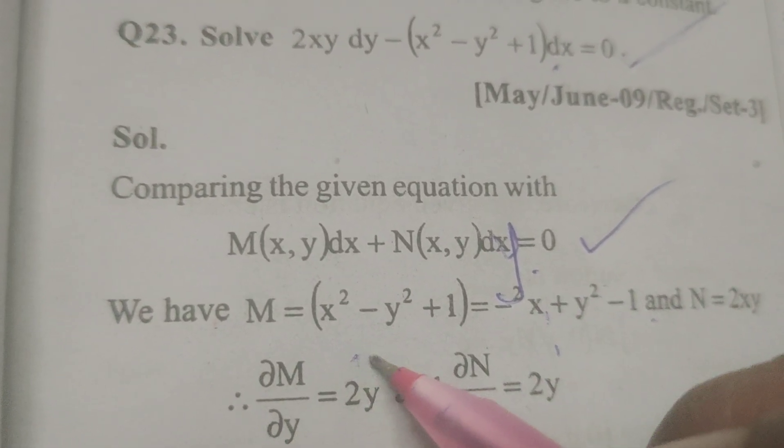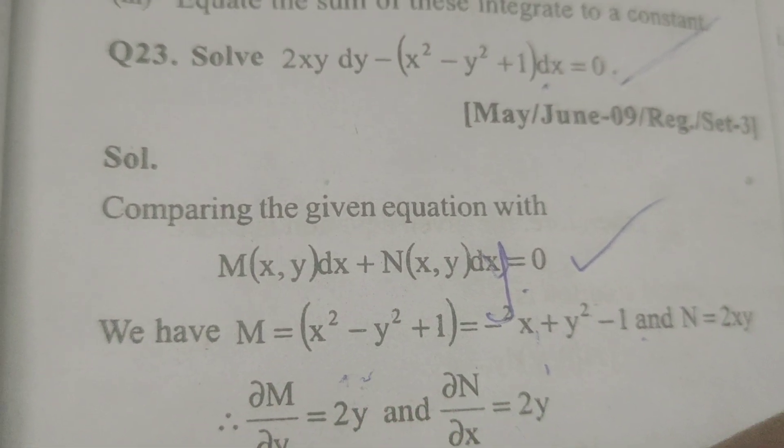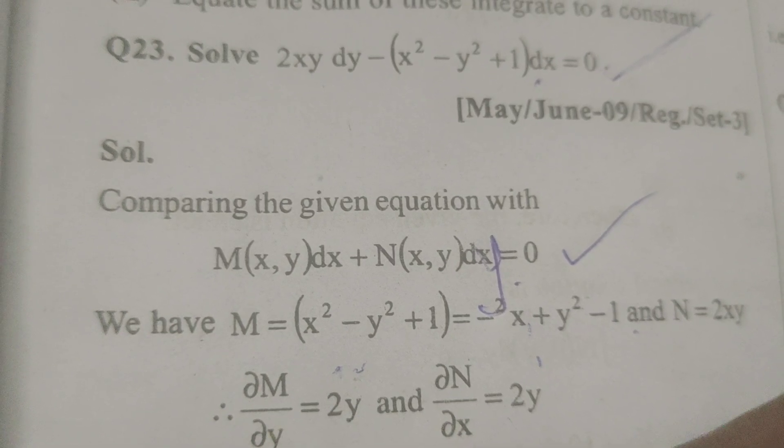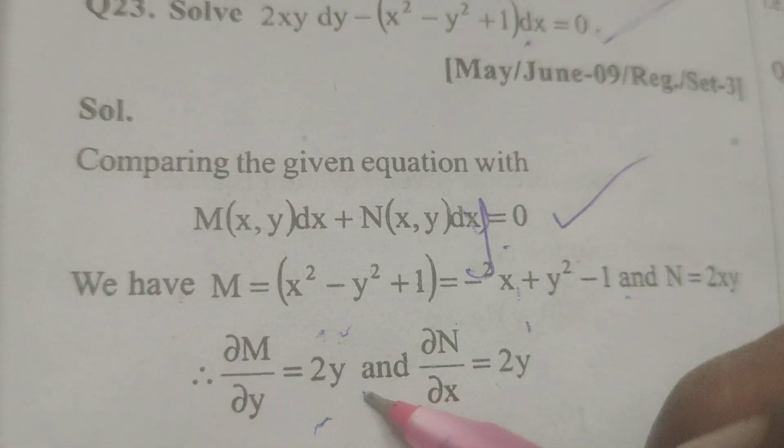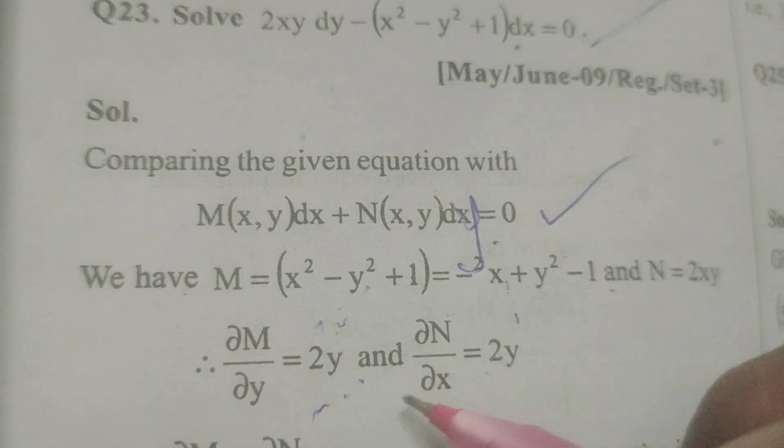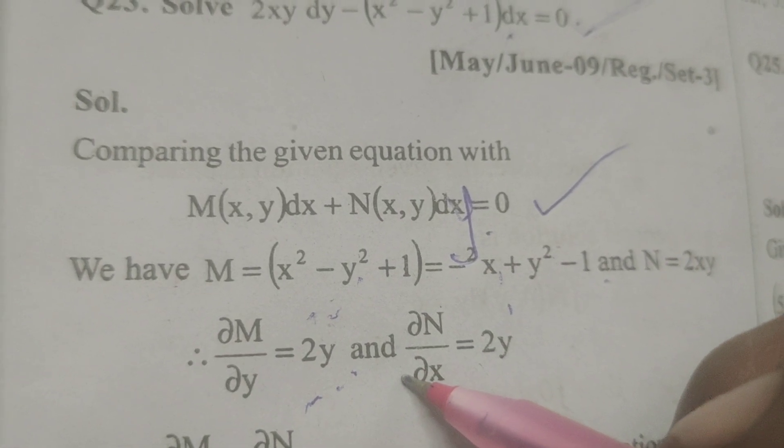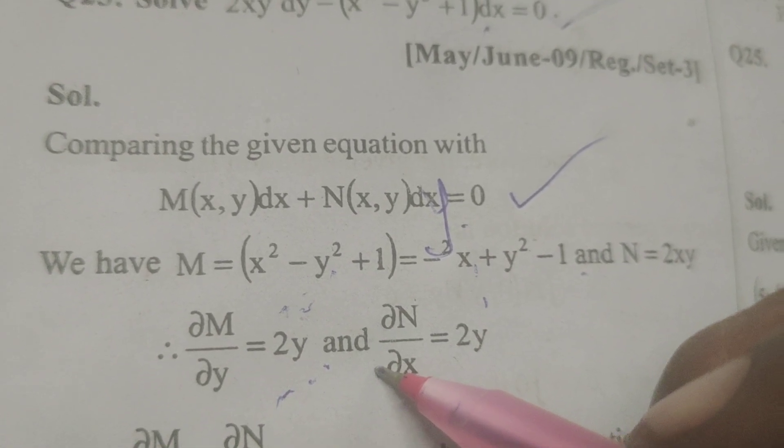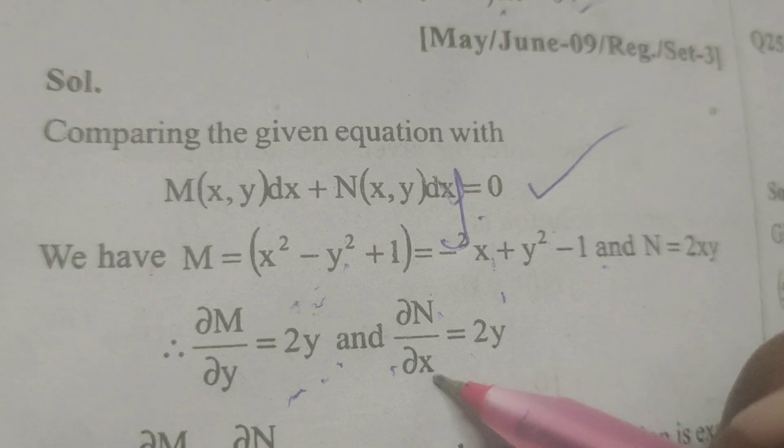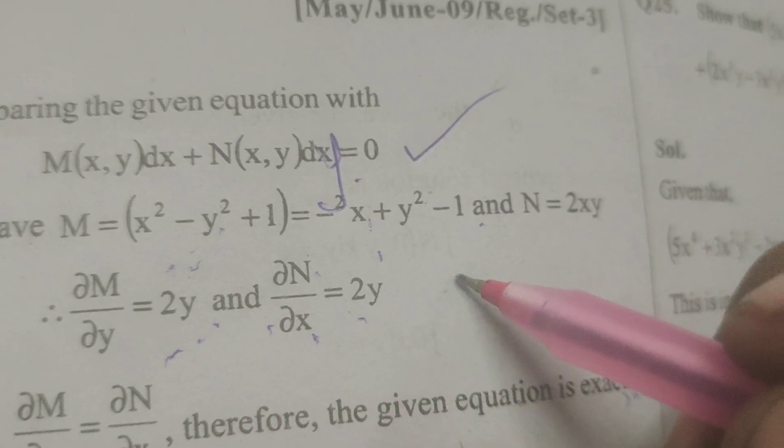First of all, find out ∂M/∂y. That is 2y. And ∂N/∂x, that is 2y.